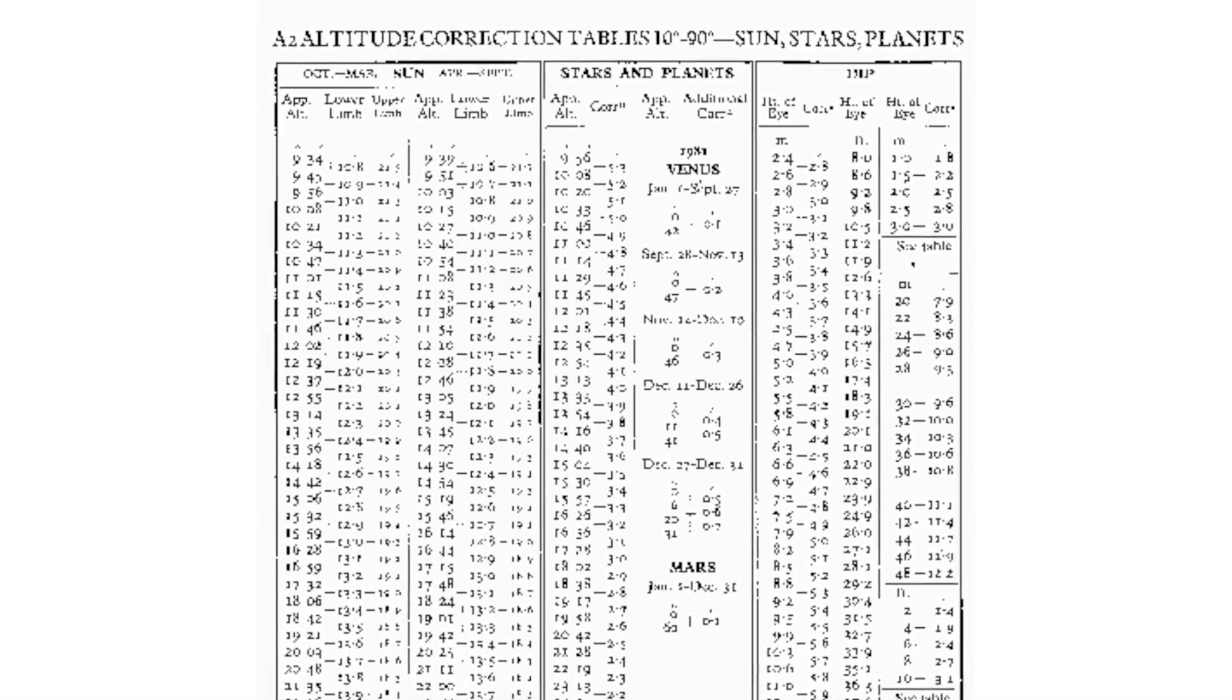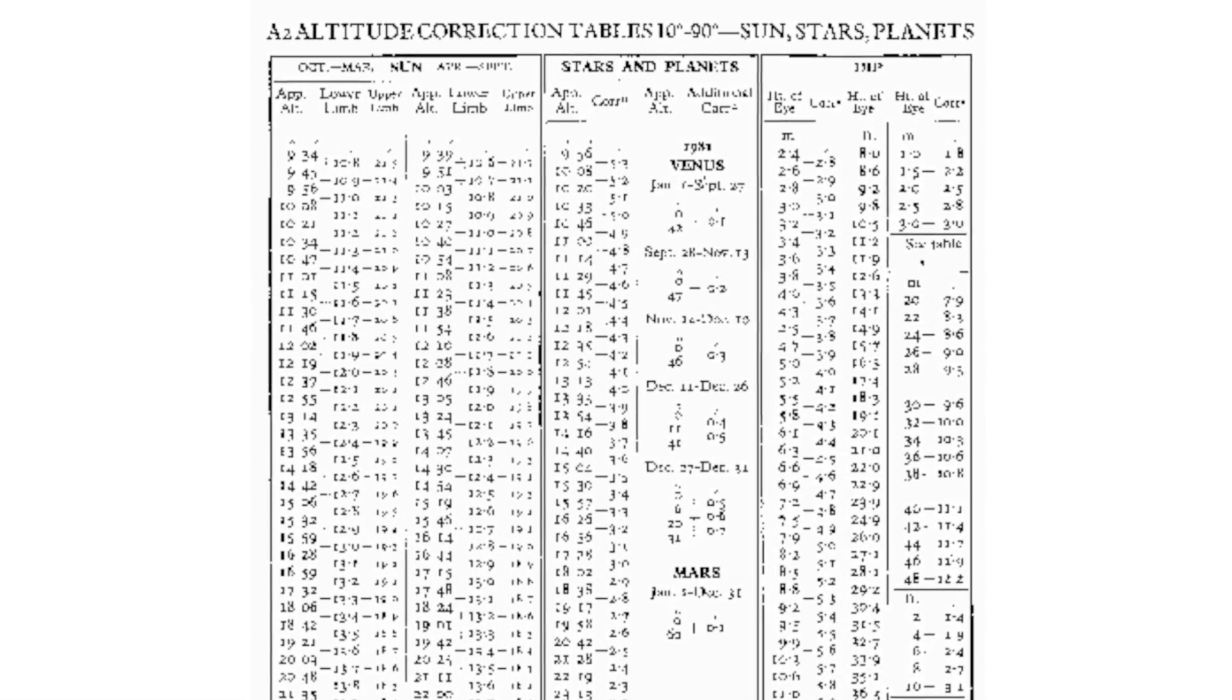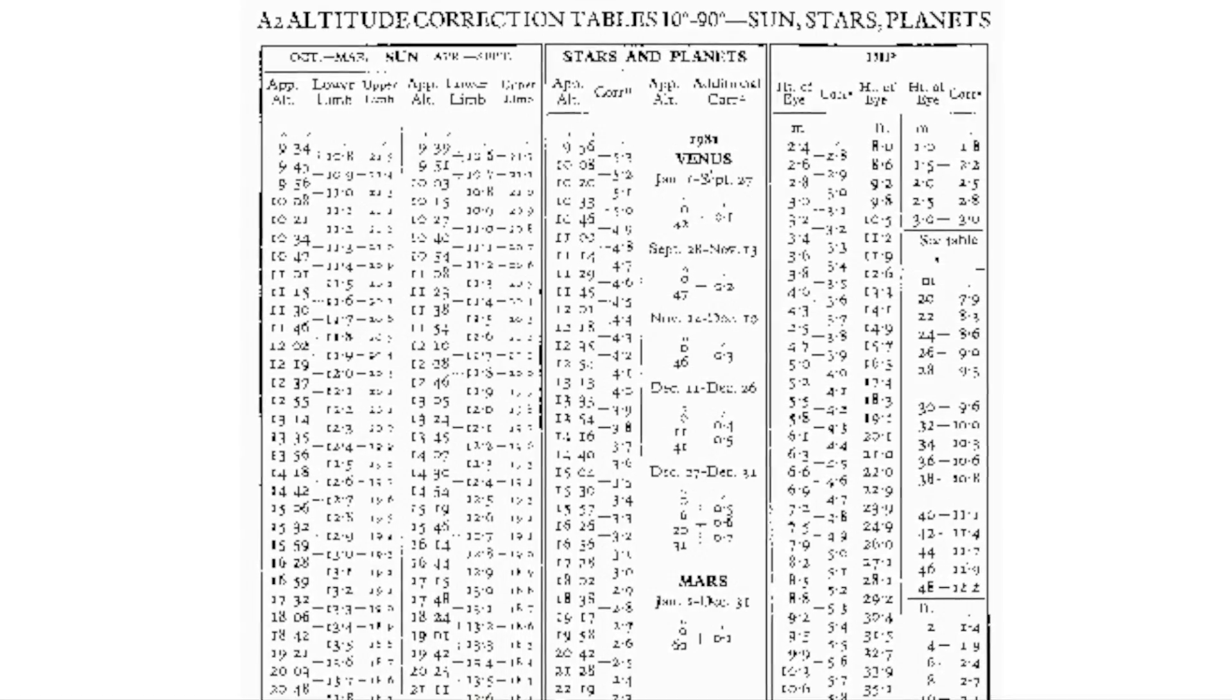In the nautical almanac, in place of the main correction for the sun, there's a different correction for stars and planets.